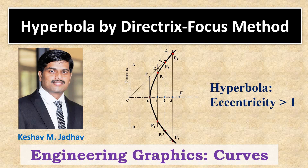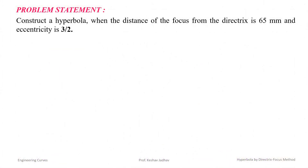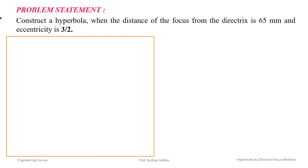Hello and welcome to this video. In this video I will explain how to draw a hyperbola by the directrix focus method, also called the focus directrix method. Remember, for a hyperbola eccentricity is always greater than 1. Let us take a problem statement: construct a hyperbola when the distance of the focus from the directrix is 65 mm and eccentricity is 3 by 2. Since eccentricity is 3 by 2, which is greater than 1, we have to draw a hyperbola.